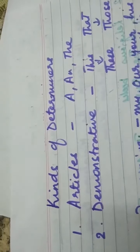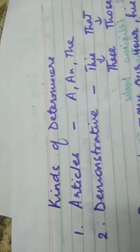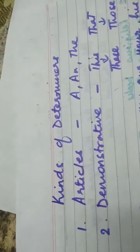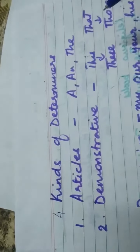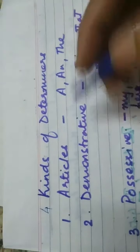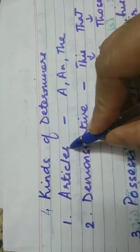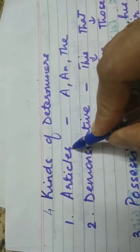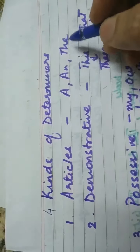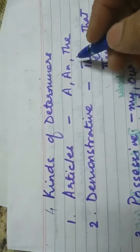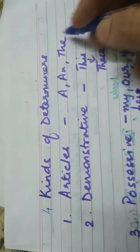Now we are going to start with determiners. Determiners are basically four types. We broadly categorize them into four kinds: the first one is the article 'a' and 'the', which you have already done in your last class.